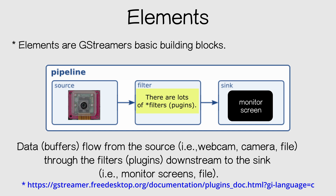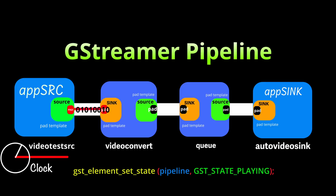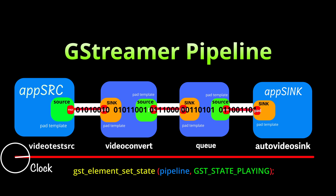Here are three elements in a pipeline. On the left you have a source, which is a camera. In the middle you have filters — there are lots of filters. On the right is a sink, in this example a monitor screen. Data flows downstream to the sink through pads — you have source pads and you have sink pads.